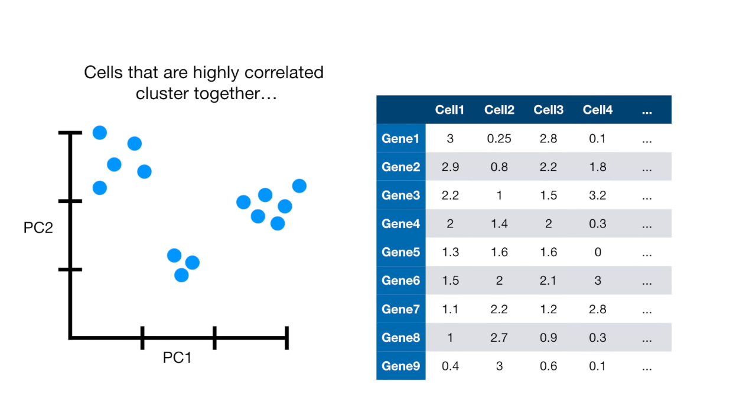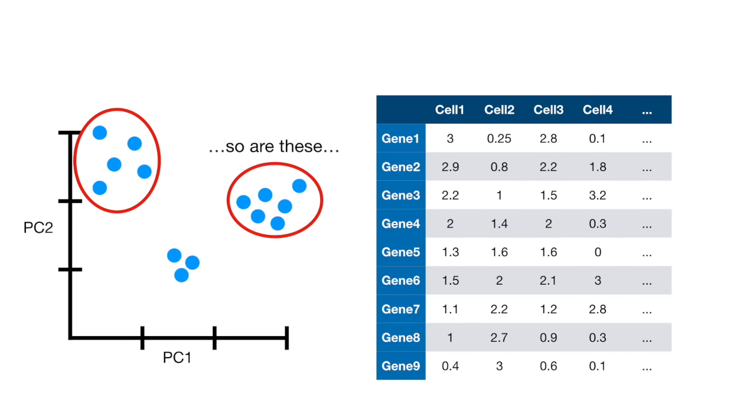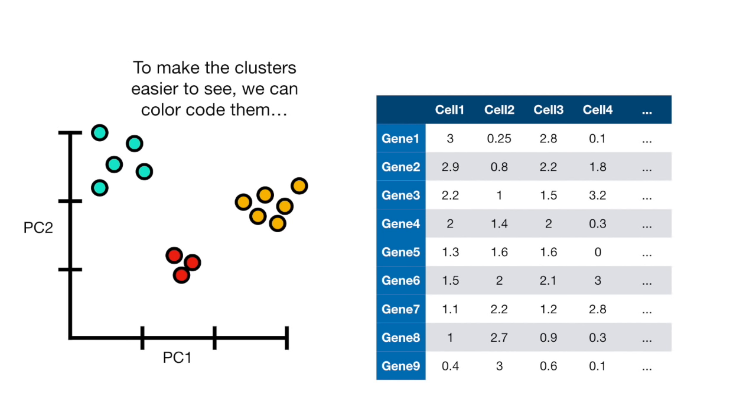Cells that are highly correlated cluster together. This cluster of cells are highly correlated with each other, so are these, and so are these. To make the clusters easier to see, we can color code them.